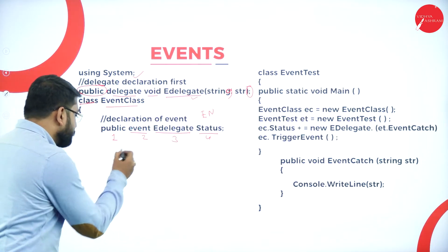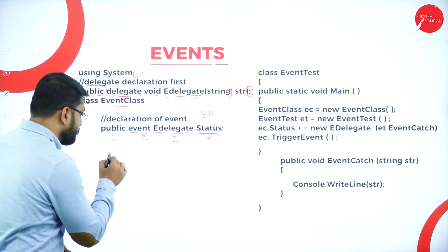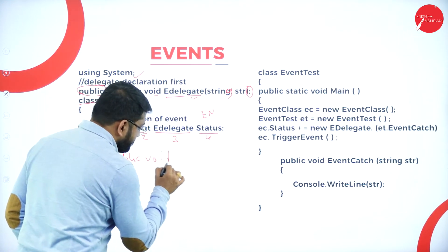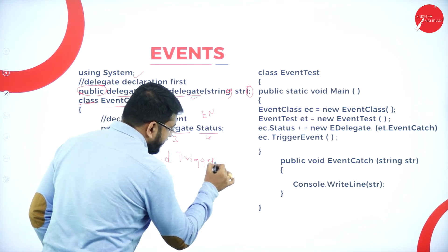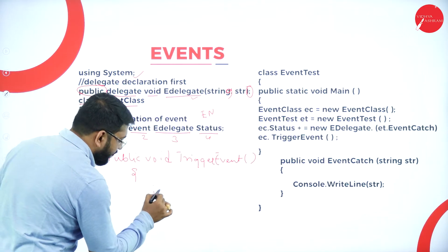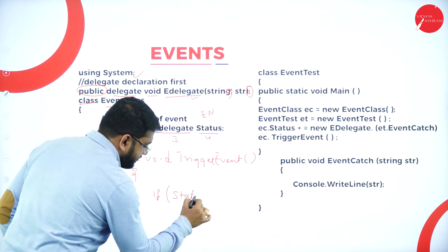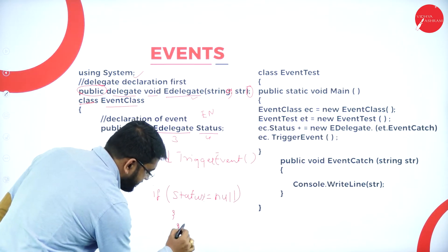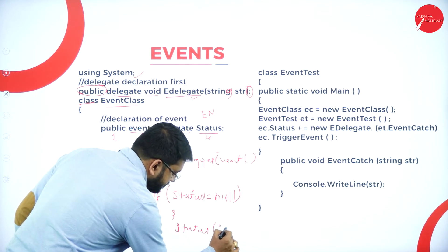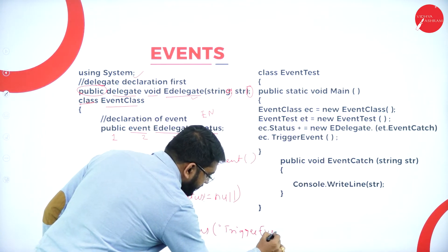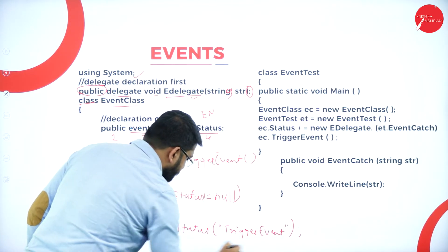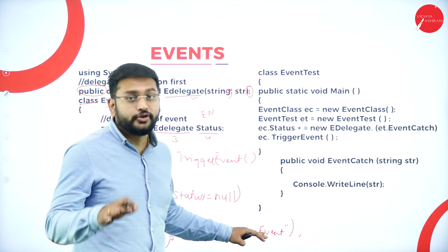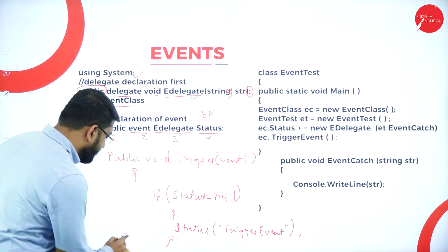To trigger the event, we create a method called public void TriggerEvent. Inside this method, if status is not equal to null, then status and the trigger event message will be executed. So if any event occurs, this message will be printed. That's what is defined in this event class.